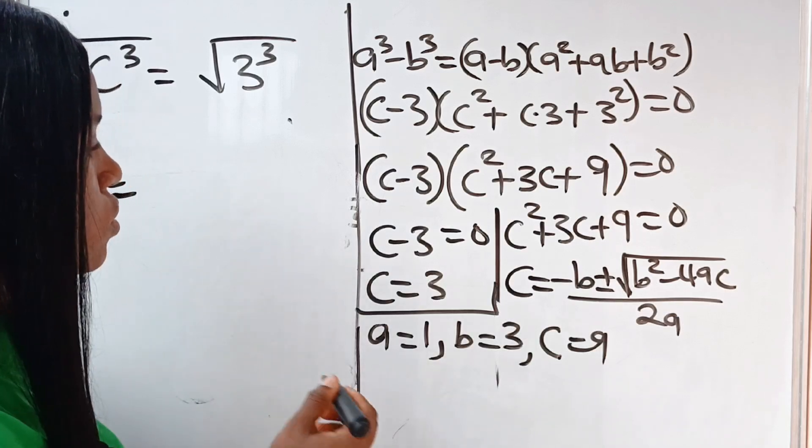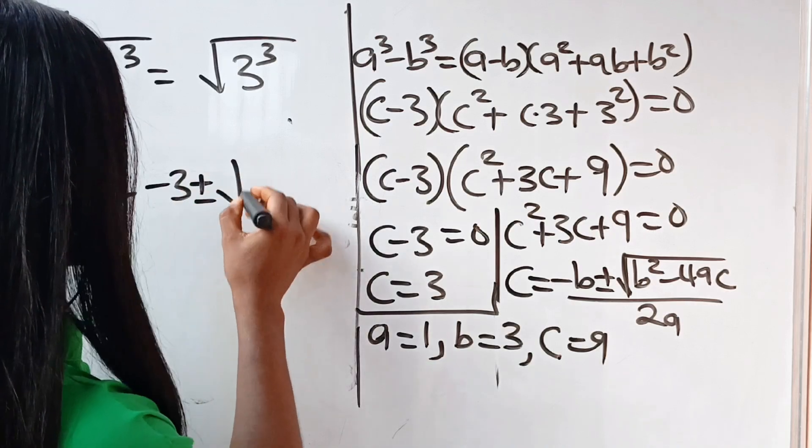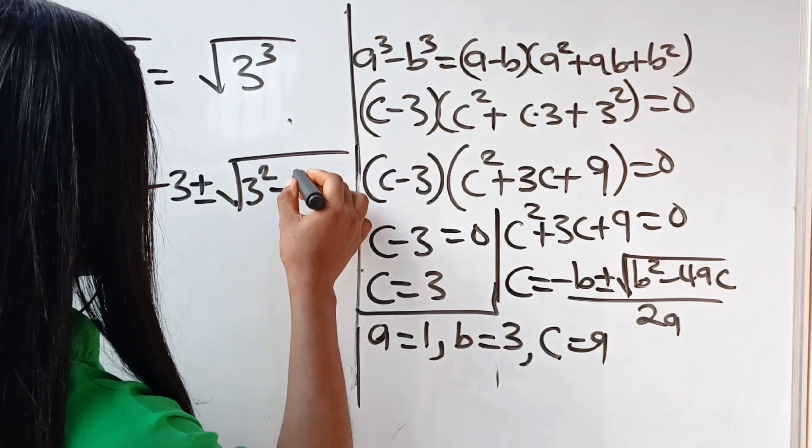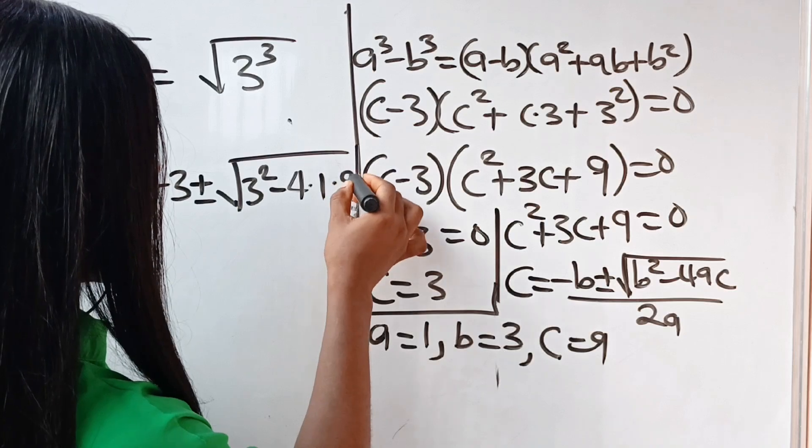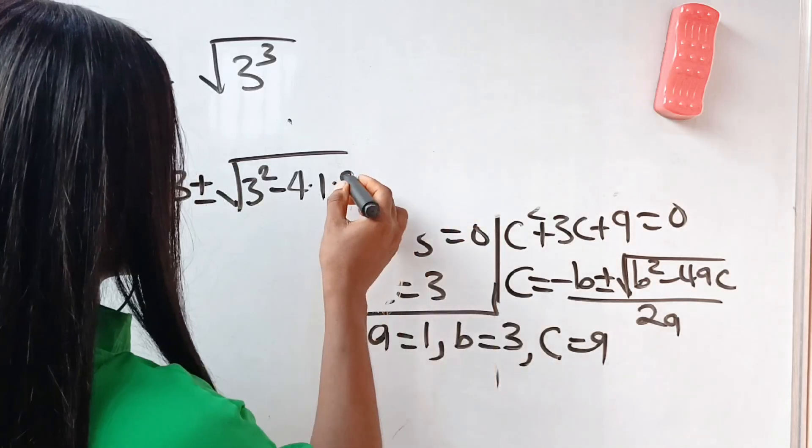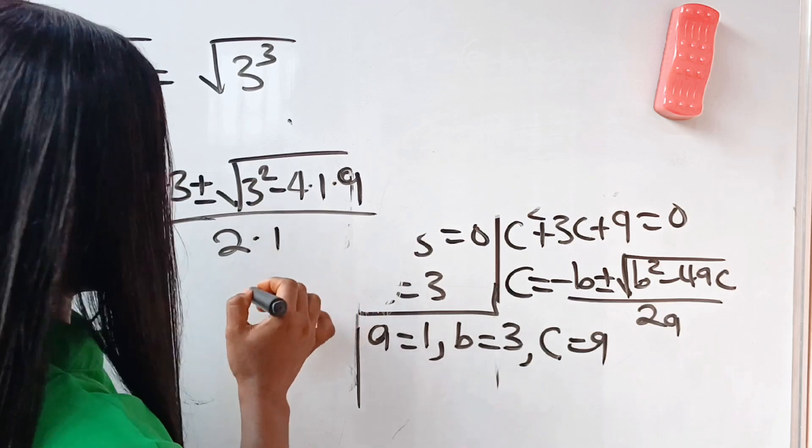So our c is equal to minus b, that is minus 3, plus or minus square root of b squared, that is 3 squared, minus 4ac. 4 multiplied by 1 multiplied by 9. Everything divided by 2a, divided by 2a. That is 2 multiplied by 1.